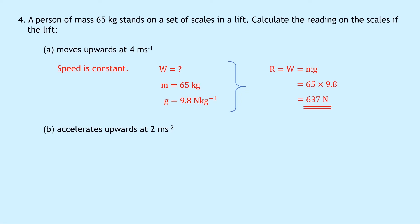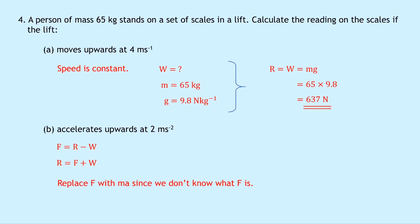Part B asks for the reading if the lift accelerates upwards at 2 m/s². Accelerating upward means R is greater than W, so F equals R minus W. Rearranging: R equals F plus W, replacing F with ma gives R equals ma plus W. Substituting: 65 times 2 plus 637, which equals 767 newtons.